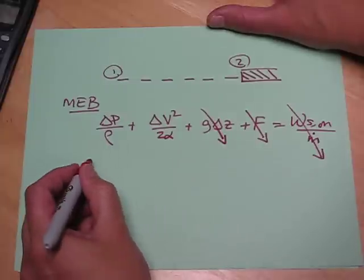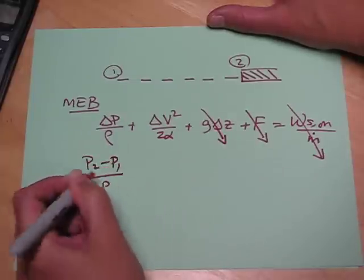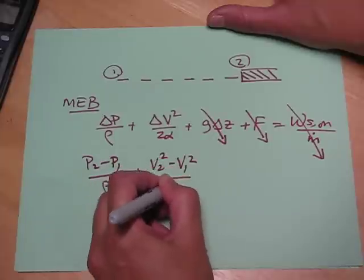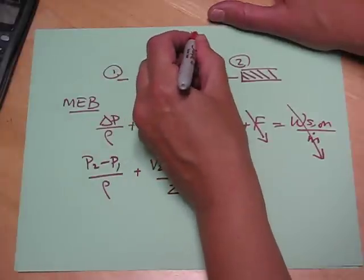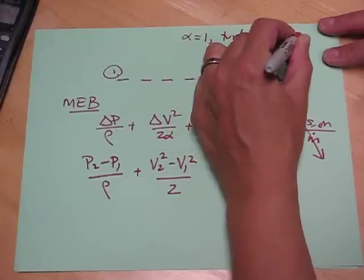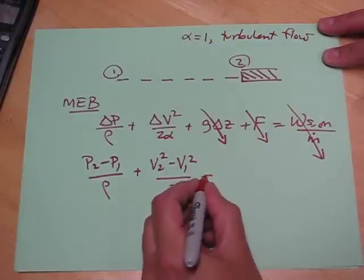So the mechanical energy balance becomes P2 minus P1 over rho plus V2 squared minus V1 squared over 2, we'll take alpha equals 1 for turbulent flow, equals 0.